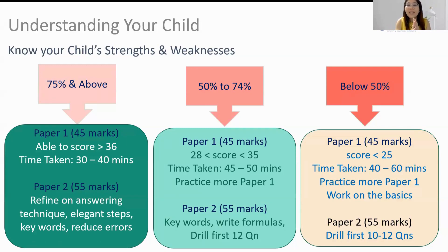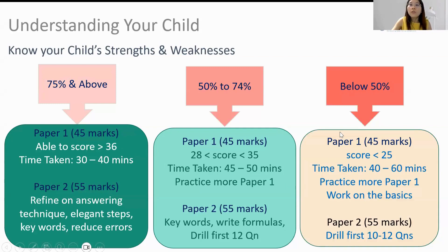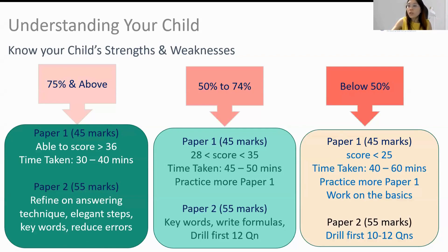If you're scoring in the 50 to 74 percent range, you need to practice more on Paper 1. For Paper 2, drill the first 12 questions first as those are the easier ones. If you're scoring below 50 percent, work on your basics — focus on Paper 1, which tests your basics, and for Paper 2, drill the first 10 to 12 questions.